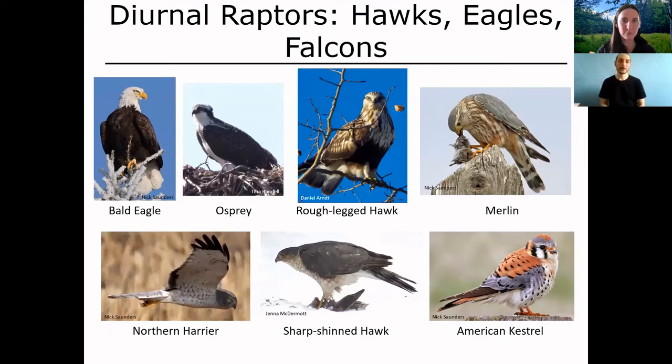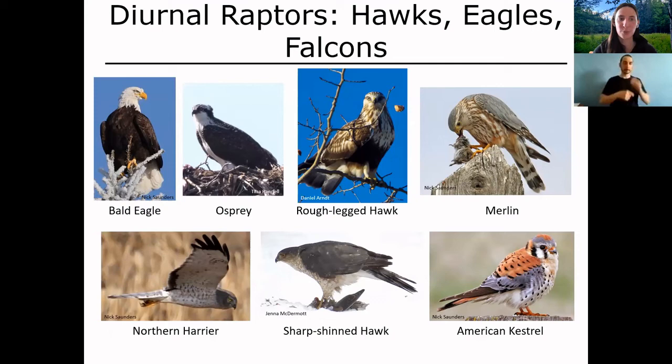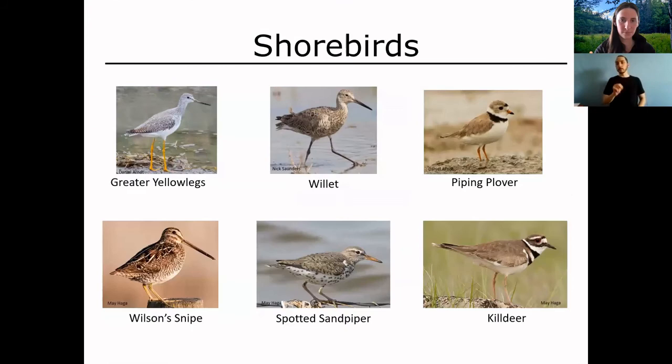Moving into diurnal raptors — birds of prey that hunt during the daytime. They all have hooked bills used for tearing apart their prey. They can range drastically in size, from the very large Bald Eagle all the way down to around the size of a robin or smaller, like the Sharp-shinned Hawk or the American Kestrel. These birds hunt from the air or from a perch.